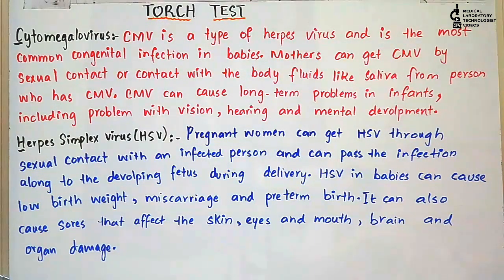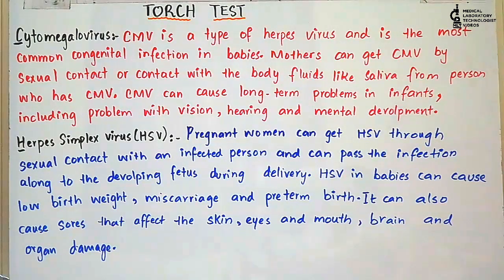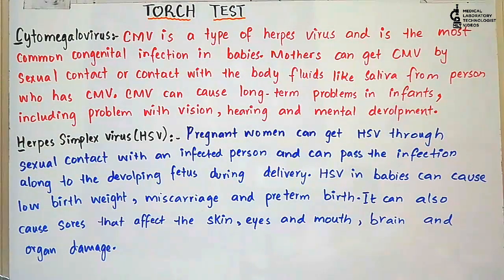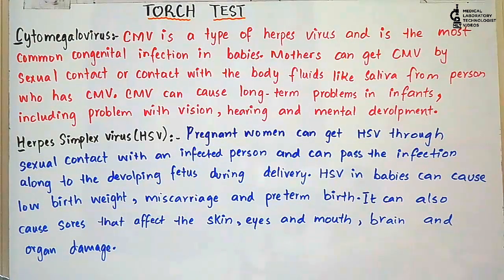So these are all the TORCH tests we do to check whether a pregnant lady has any infection that can affect the fetus, or to check a newborn baby after delivery. To summarize: T for Toxoplasmosis, O for Others including Syphilis, R for Rubella, C for Cytomegalovirus, and H for Herpes Simplex Virus. This was the summary of the TORCH test, and I hope you will always remember what TORCH stands for and why it is needed.